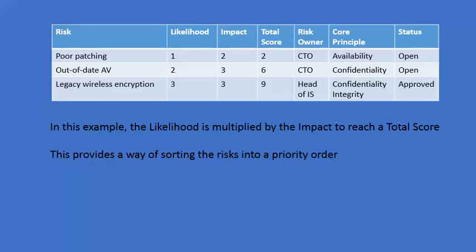Each risk should have an owner. Sometimes this could be the head of information security, the head of information systems, the chief technology officer, or it could actually be somebody who's not in IT at all but part of the business. But whoever the owner of the risk is, it should be identified in the risk matrix.